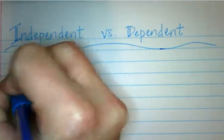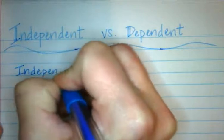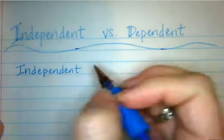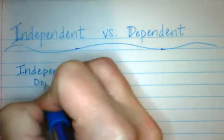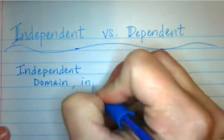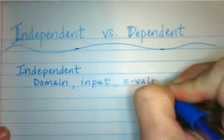So independent means it stands alone. That's probably what you think about with independent, but some other names for independent is the domain. It's also the input, and it's also the x-value.